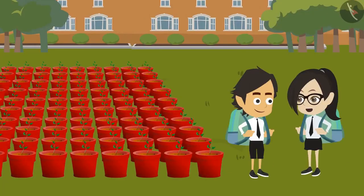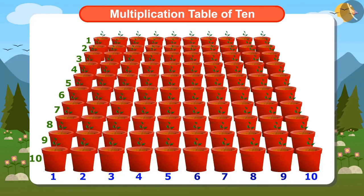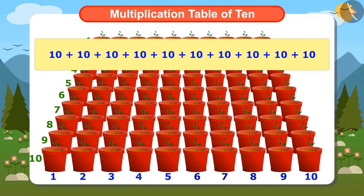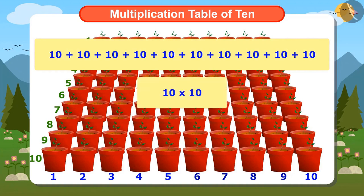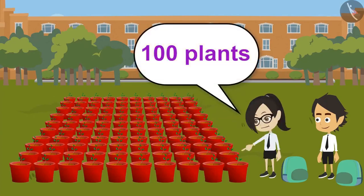It's very easy. Tell me, how many plants are there in a row? 10. Now tell me, how many rows of plants are there? 10. So to find out how many plants there are, we will add 10 times 10, or multiply 10 by 10. To know this, we use the multiplication table of 10. 10 times 10 is 100, so I said that a total of 100 plants are kept here.